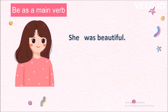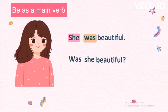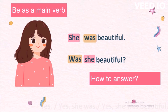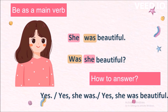In 'She was beautiful,' she is the subject and was is the main verb. To form the question, we change the word order: Was she beautiful? First the main verb, then the subject, and the rest of the sentence. How to answer: we can either say yes, or yes she was, or yes she was beautiful.